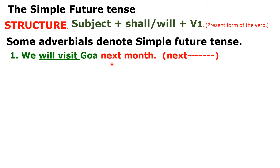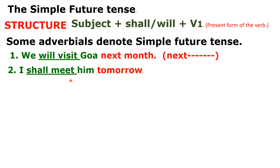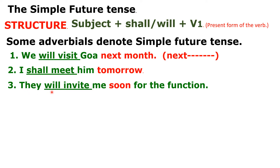The adverbials used with simple future tense include: 'next' — for example, 'We will visit Goa next month.' The word 'next' is used — next month, next day, next year, next Sunday. Second keyword: 'tomorrow' — for example, 'I shall meet him tomorrow.' Third: 'soon' — for example, 'They will invite me soon for the function.'